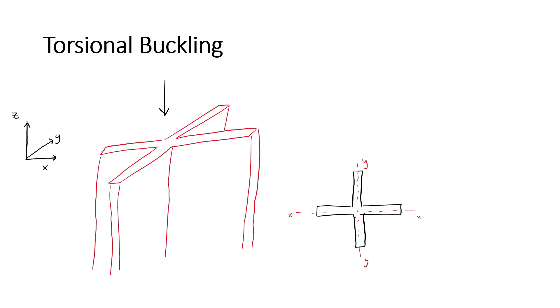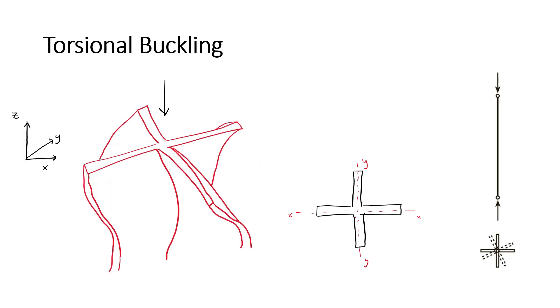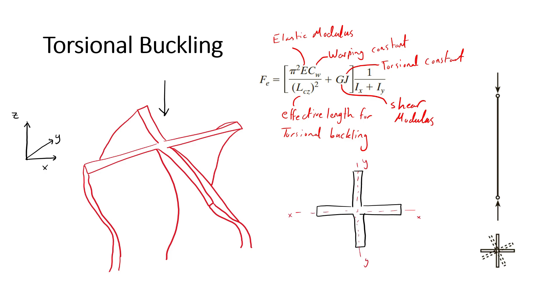Torsional buckling is a phenomena that happens to some doubly symmetrical sections under compressive loading. The cruciform shape shown is particularly vulnerable to this type of buckling. Under torsional buckling, there is no flexure, but rather a twisting about the longitudinal axis. To evaluate the strength of a member in torsional buckling, the following equation for the elastic buckling stress is used instead of the one previously shown for flexural buckling. Where E is the elastic modulus, CW is the warping constant, J is the torsional constant, LCZ is the effective length for torsional buckling, and G is the shear modulus.